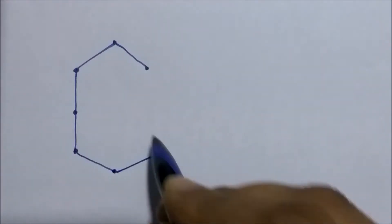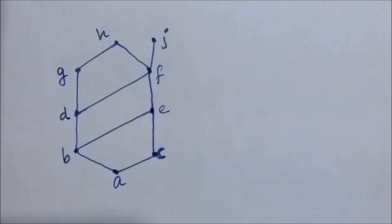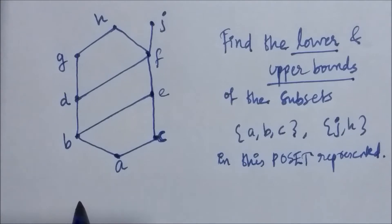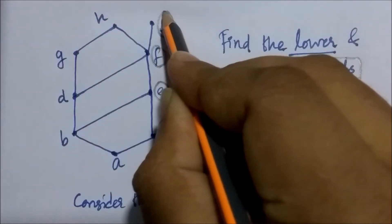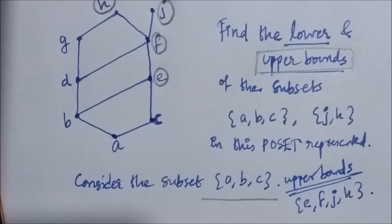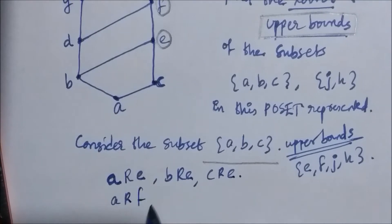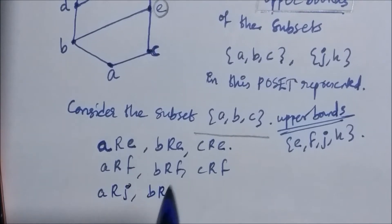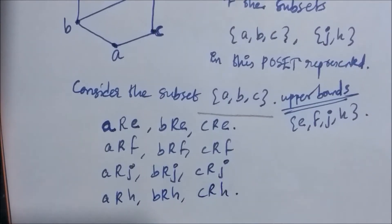We will start with understanding what is a lower bound and upper bound. Here we have a Hasse diagram representing a partially ordered set. We have to find the lower and upper bounds of the subsets {a, b, c} and {j, h}. Consider the subset {a, b, c}. The upper bounds of this subset are the elements e, f, j, and h, because a, b, and c are each related to e, and similarly to f, j, and h.